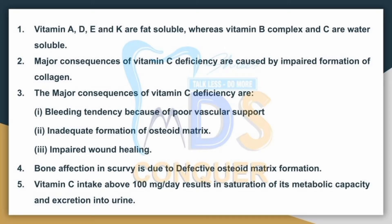Point No.2: Major consequences of Vitamin C deficiency are caused by impaired formation of collagen. These include bleeding tendency because of poor vascular support, inadequate formation of osteoid matrix, and impaired wound healing.